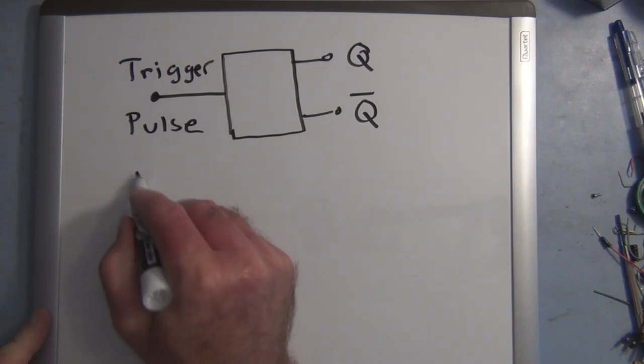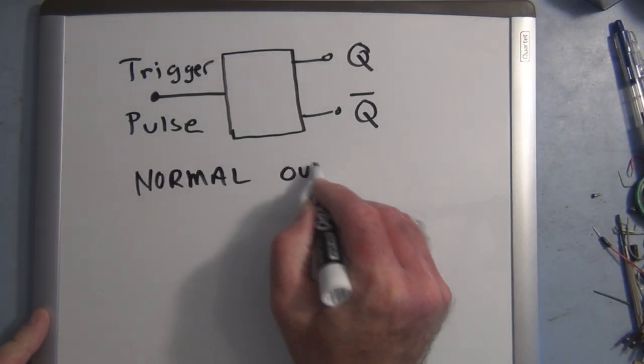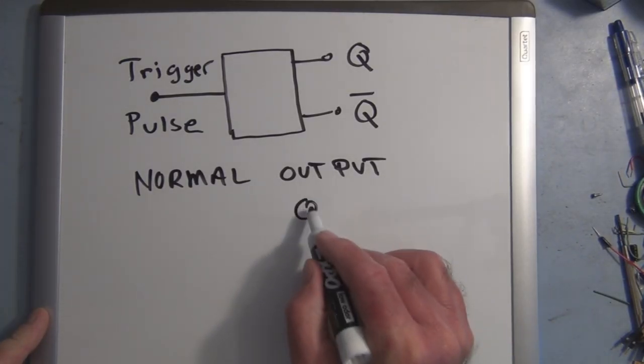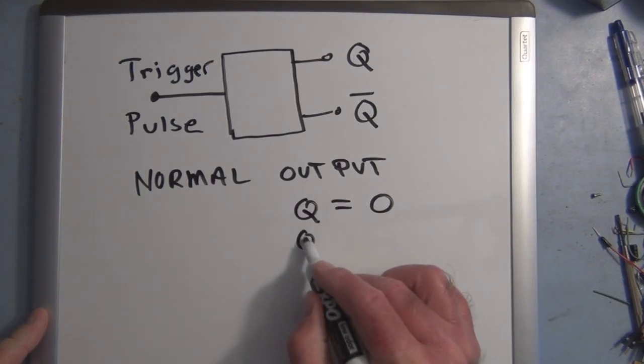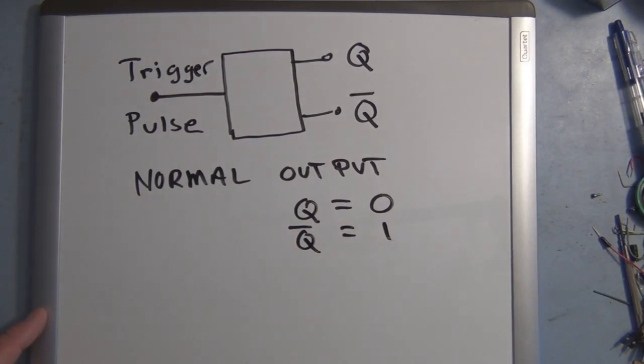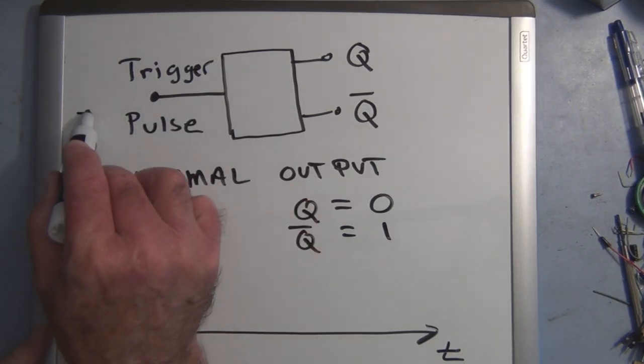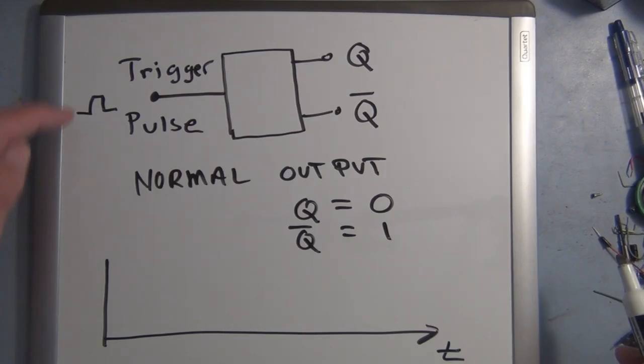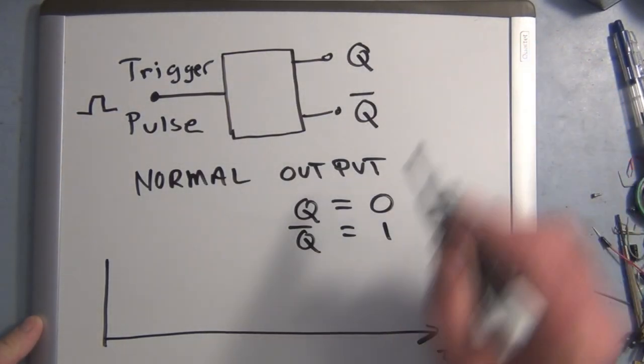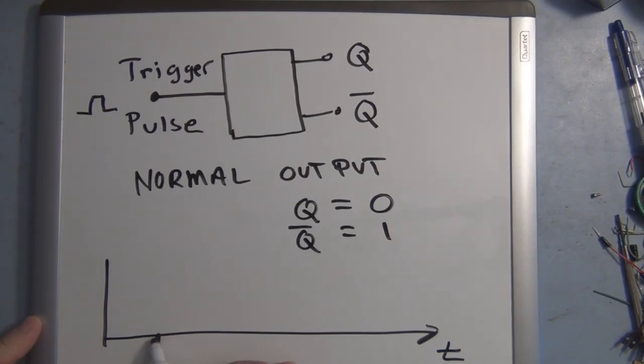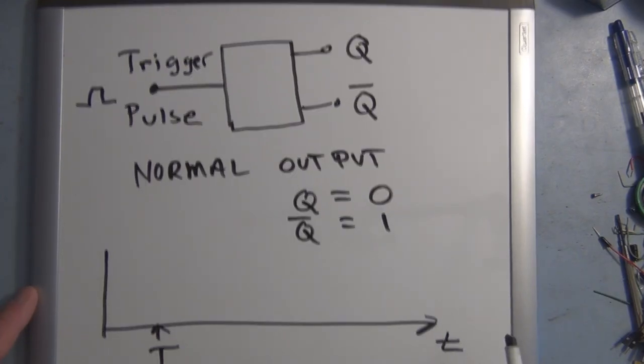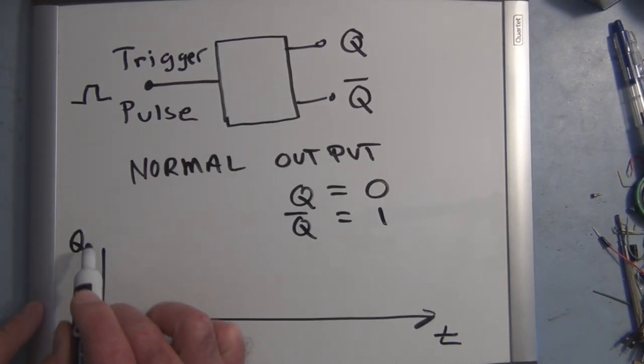Let me elaborate on that. So here's a one shot and let's say that the normal output for this is Q equal to 0 and Q naught equal to 1. For the quasi stable output, say this is time T, when we have a positive pulse that comes in and triggers this, this Q will switch over.